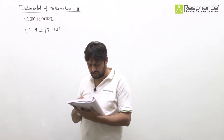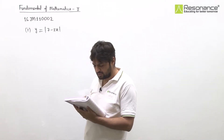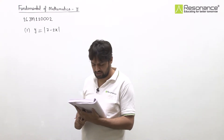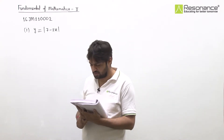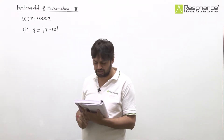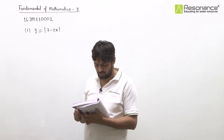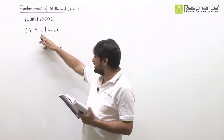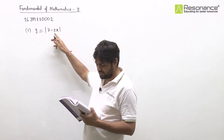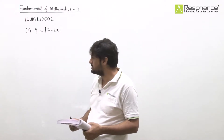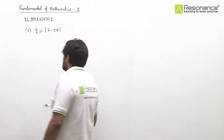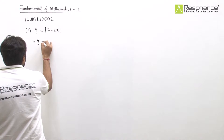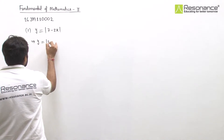In this question we have to draw the labeled graph of the following modulus functions. There are 5 parts with 5 modulus functions. The first part is y equal to mod of 7 minus 2x, which we can also write as y equal to mod of 2x minus 7.